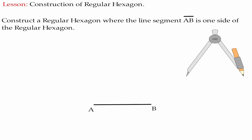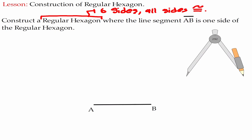Welcome. Today, we'll construct a regular hexagon. A regular hexagon is a figure with six sides where all sides are congruent. The objective here is to construct this figure where AB is one of the sides of this regular hexagon.